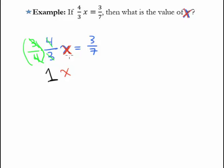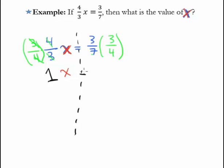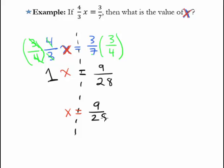So all that's left is this invisible coefficient of 1. 1 times x is left on the left side of the equation. Of course, we can't just do something to one side of the equation without doing it to the other side as well. So we multiply 3 fourths on the right side too. Nothing cancels there, so we just multiply across: 3 times 3 is 9, and 7 times 4 is 28. So our final answer is x equals 9 over 28.